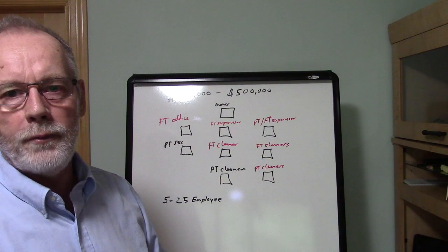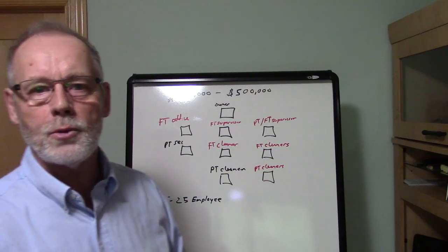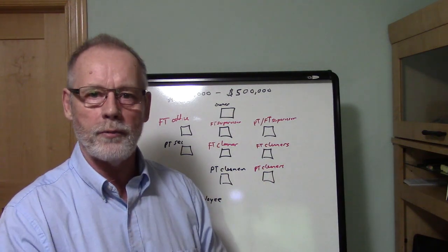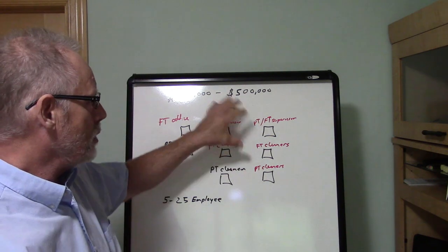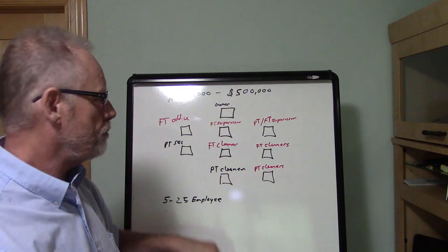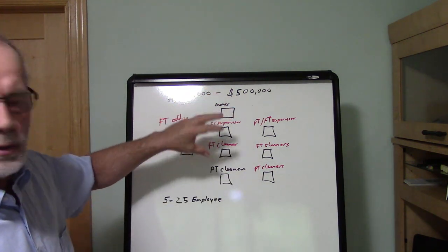In fact, if you had one account that was generating $20,000, there you go, you've got your quarter of a million dollars right there. So keep that in mind. That's how you can plan out how you're going to scale and know what your organizational chart will look like as you're building.